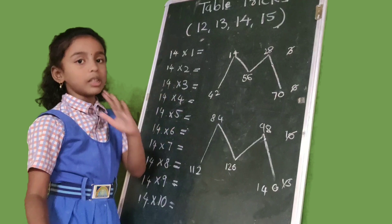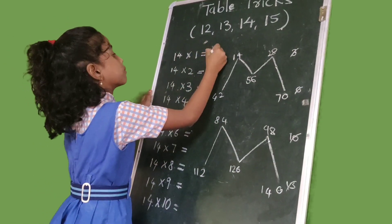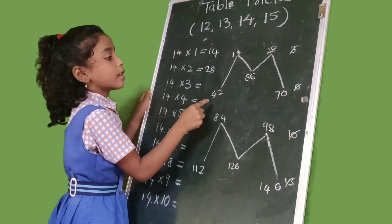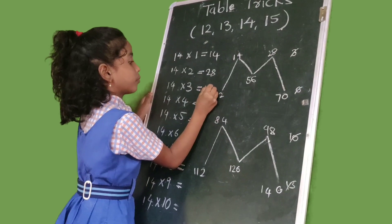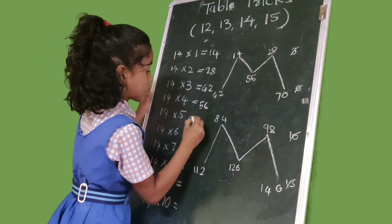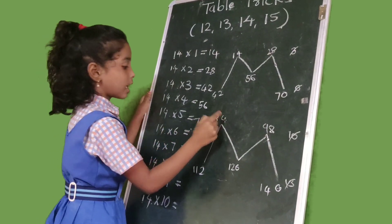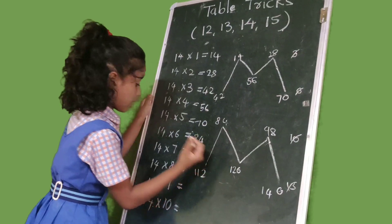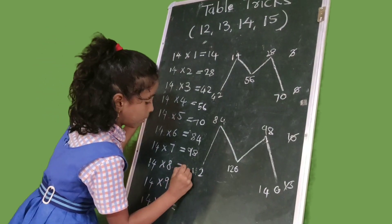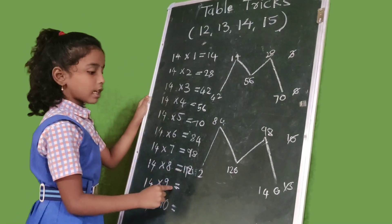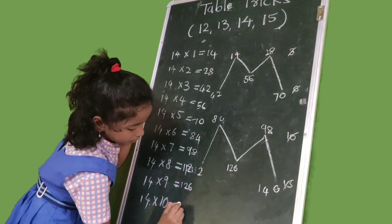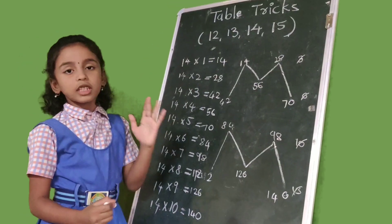Friends, this is the 14 table trick. 14×1=14, 14×2=28, 14×3=42, 14×4=56, 14×5=70, 14×6=84, 14×7=98, 14×8=112, 14×9=126, 14×10=140. This is the 14 table trick.